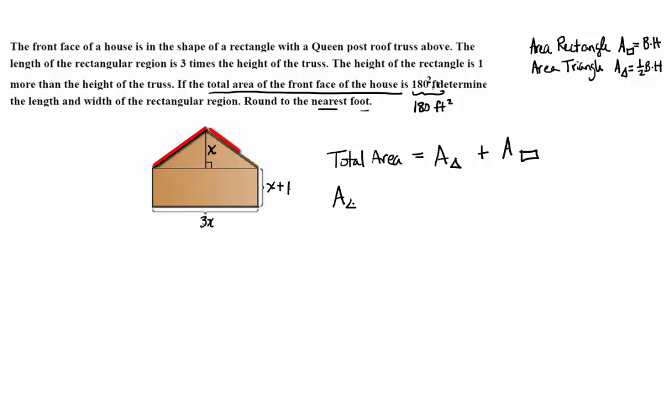So the area of the triangle is equal to one half the base times the height. So what's the base of the triangle going to be? Good. It's the same as the length of the rectangle, the base of the rectangle. So 3x. So we're going to have one half times 3x times the height, which is x. So another way of writing that is 3 halves x squared.